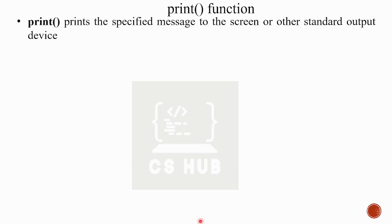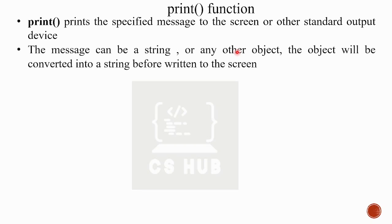Now we need to get familiar with the print() function. The print() function prints a specified message to the screen or other standard output device. Our message can be anything — a string or any other object. Objects will be converted to a string before being returned to the screen.